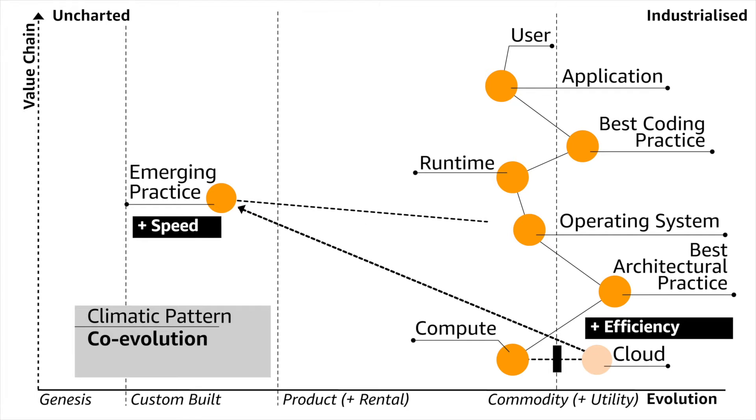For example, in compute as a product we have what's called high MTTR — a high mean time to recovery. It would take you weeks if not months to get a new machine, which is why we did all this capacity planning, why we made machines extra resilient with N+1 and redundant components, and why we did all these disaster recovery tests. But as compute shifted to a utility, it now has low MTTR. If I want a machine it takes me seconds to get a new one — it's an API call.